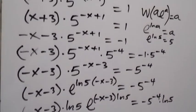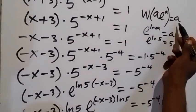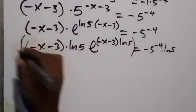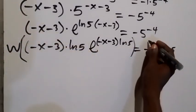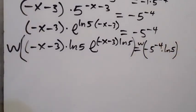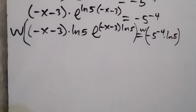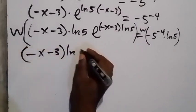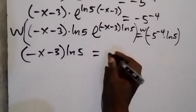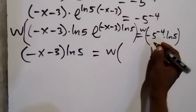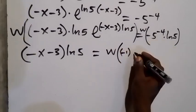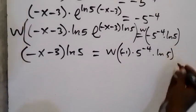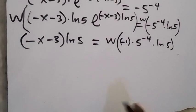Then we apply the Lambert W function: W(a · e^a) = a. When we apply the W function on both sides, the left side reduces to minus x minus 3 times ln 5, and the right side equals W of minus 5 raised to power minus 4 times ln 5. Let's write this again — we separate minus 1 and then multiply by 5 raised to power minus 4, times ln 5, and work with the right hand side in another way.